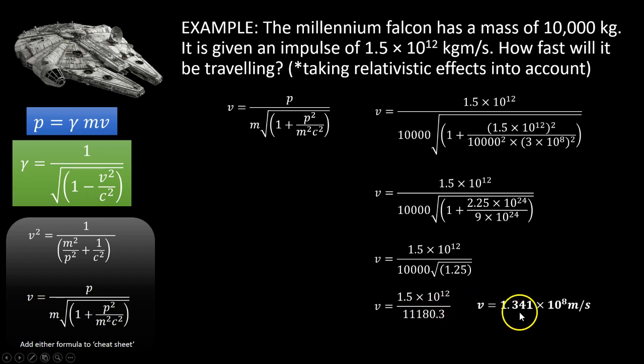Which gives 1.34 times 10 to the 8 meters per second, or 0.447C. Now just compare that with classical mechanics. You've got momentum over mass, so it would come out to be 1.5 times 10 to the 8 meters per second. So I hope that helps to explain why there's a maximum speed limit to the universe and give you some examples of how you use relativistic momentum and energy.